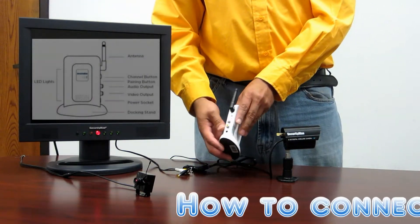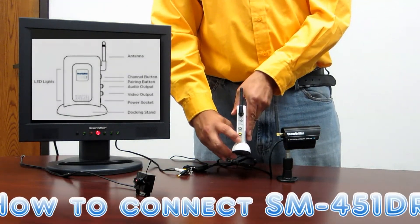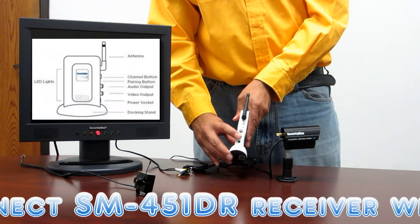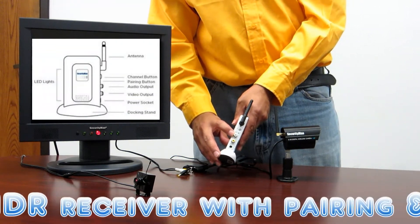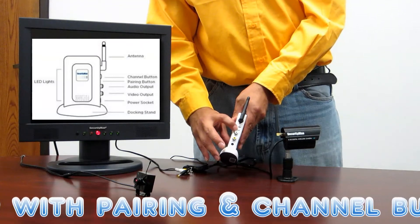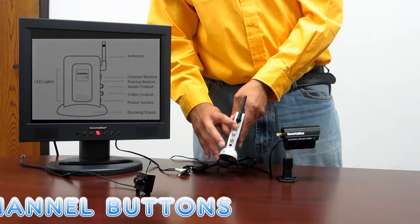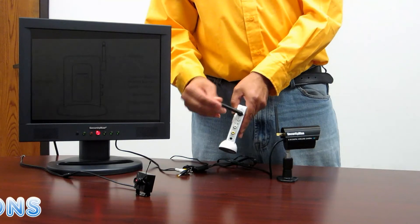On the receiver itself, you've got your power socket at the bottom, your video and audio components, your pairing button which is a little black one, your channel switch button, and your rotating antenna.